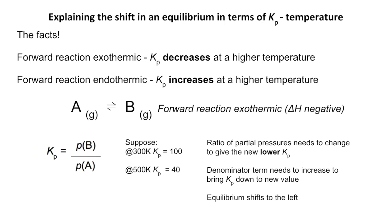So how does the equilibrium do that? It shifts to the left. And of course, using Le Chatelier's principle, we already know that an increase in temperature will favour the endothermic direction, so we know that it's going to go backwards. But this helps us explain it in terms of the equilibrium constant.